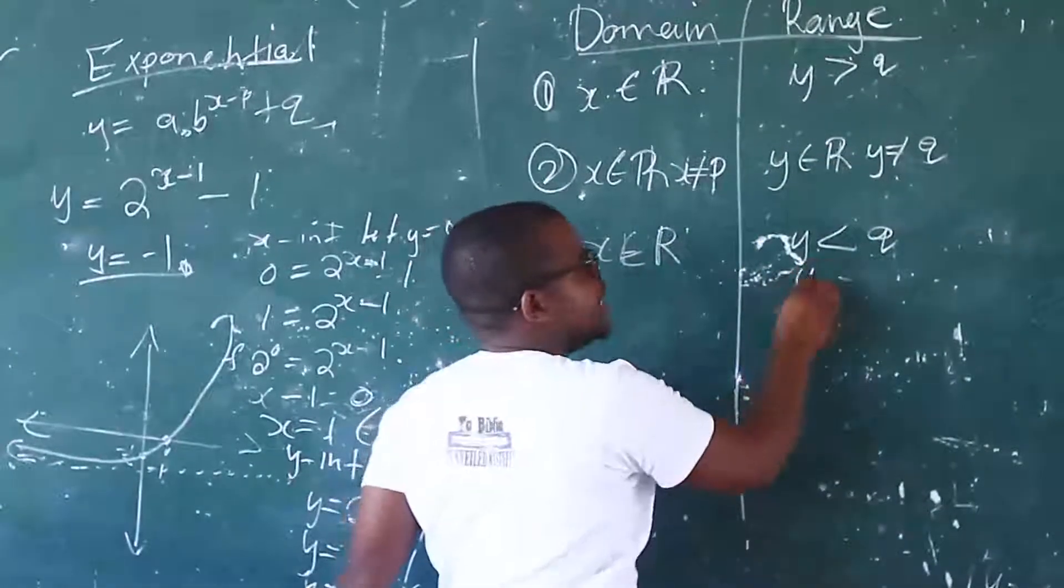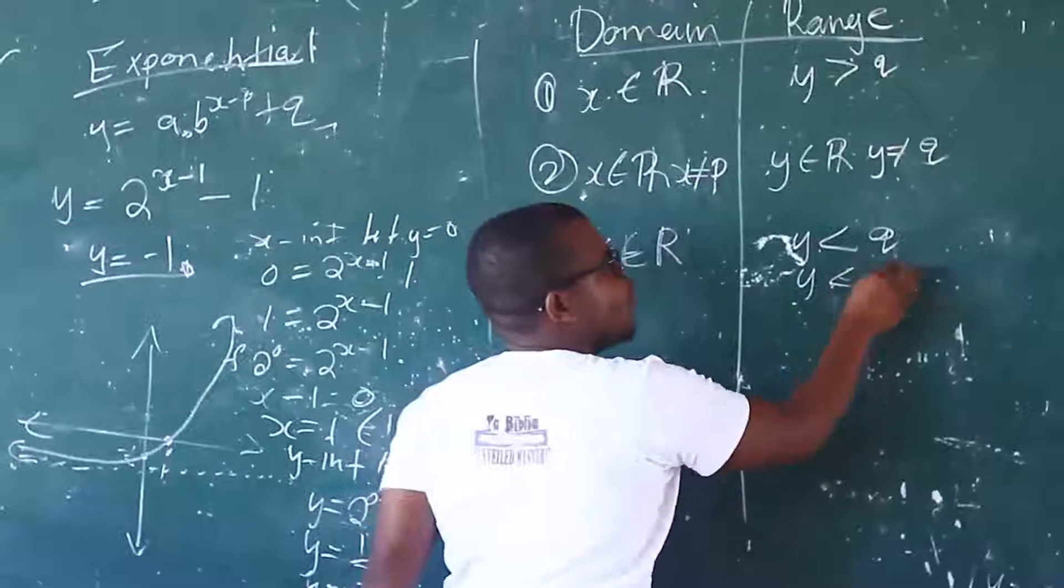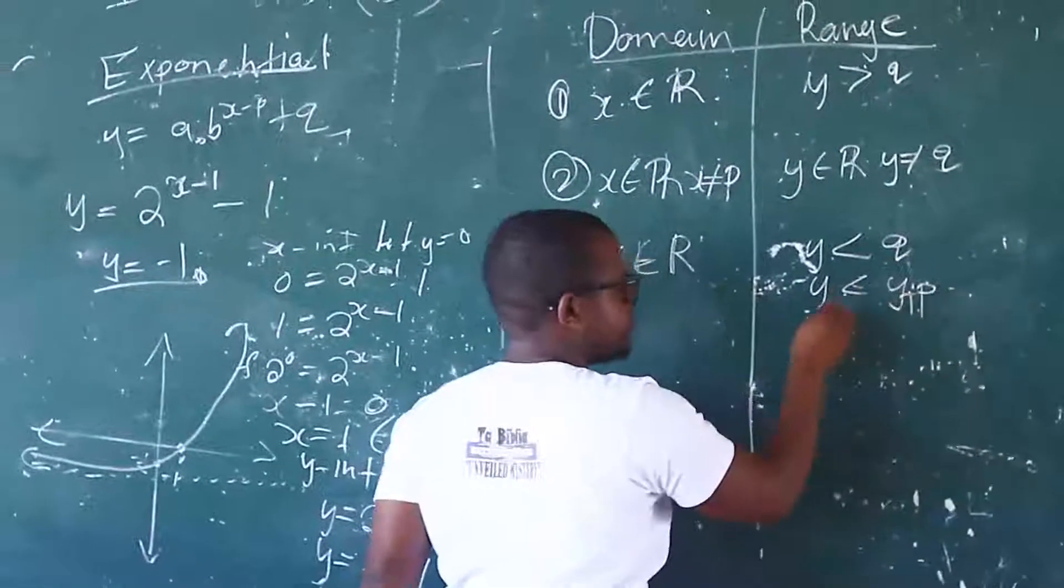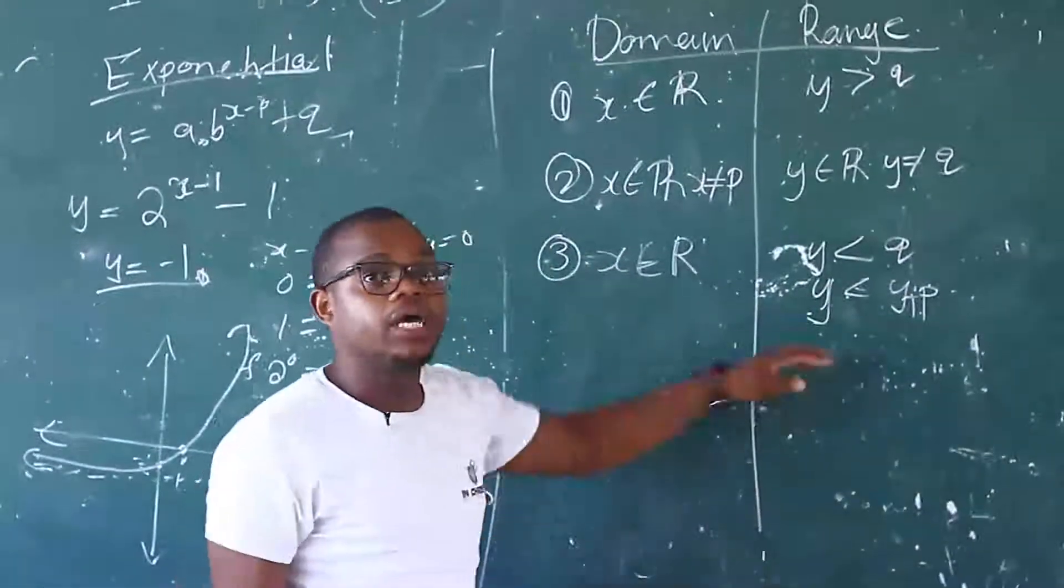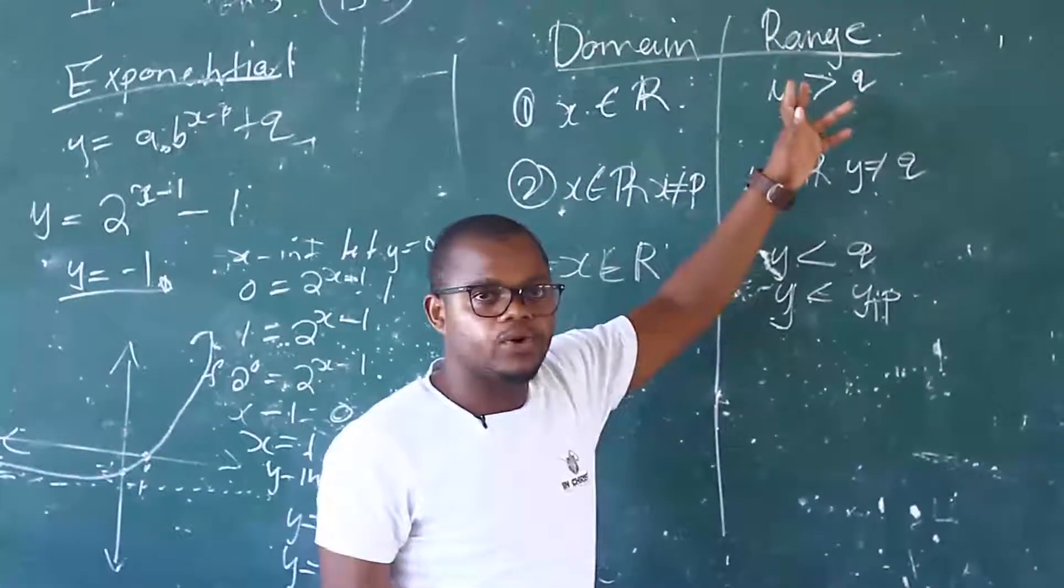So you must write that Y is less than Y of the turning point. So that is the range of the parabola. Okay?